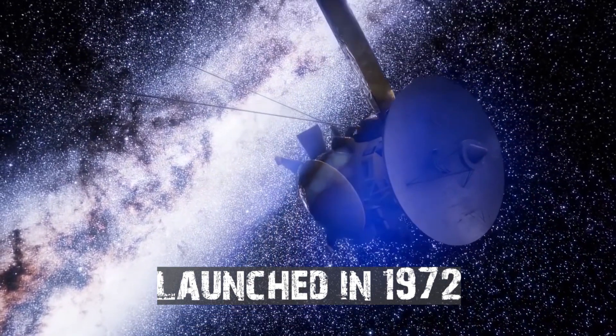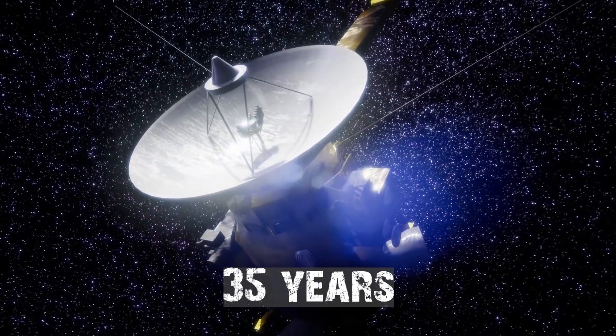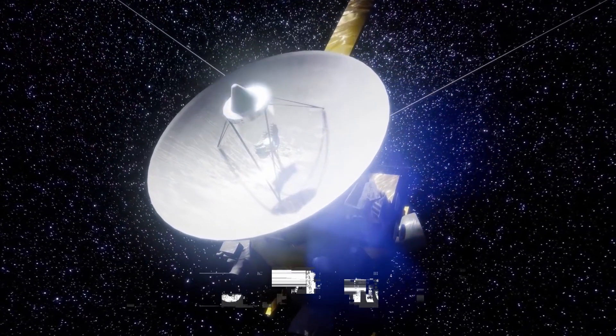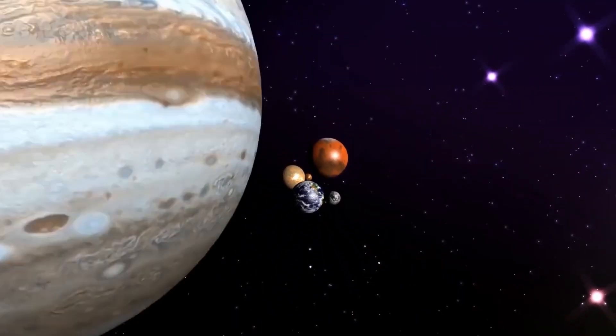Voyager 1 and 2 were far beyond Pluto's orbit in 2004. After 35 years of continuous operation, the Voyager spacecraft became the first to hold the record for the longest-running spacecraft.